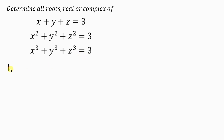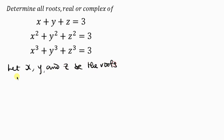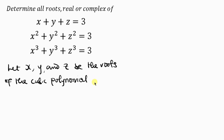So we can let x, y, and z be the roots of a cubic polynomial. Using a cubic polynomial to solve this kind of equation can make it a bit easy. The cubic polynomial is t cubed plus at squared plus bt plus c equal to 0.